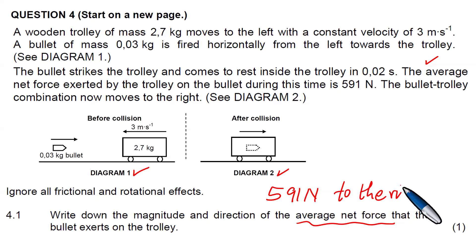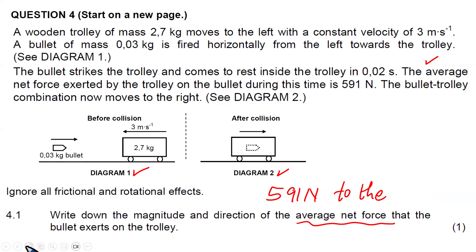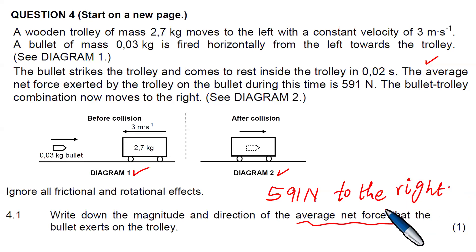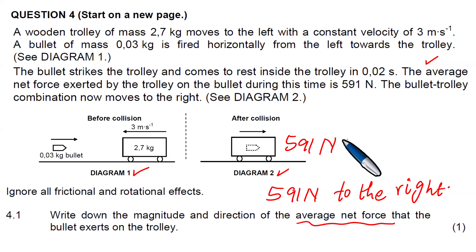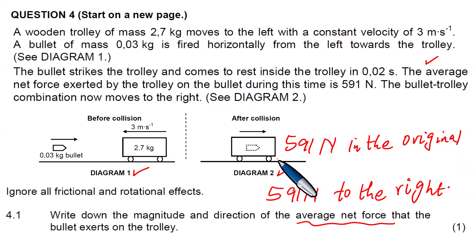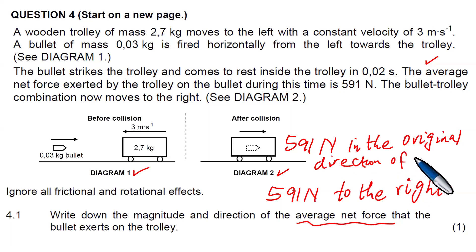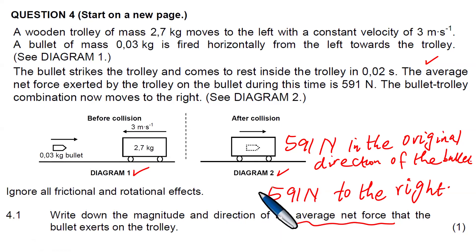So it is exactly to the right. You can say it is 591 Newtons to the right, or you can say it is 591 Newtons in the original direction of the bullet. Either the first answer or the second answer works for this question. No calculation is needed — we just write down the answer.